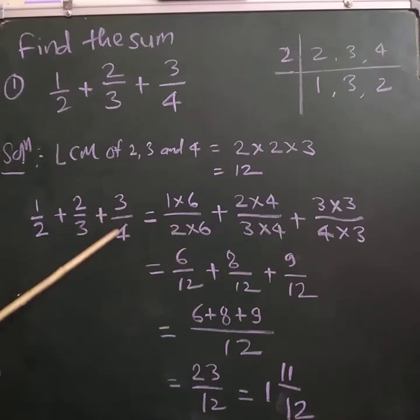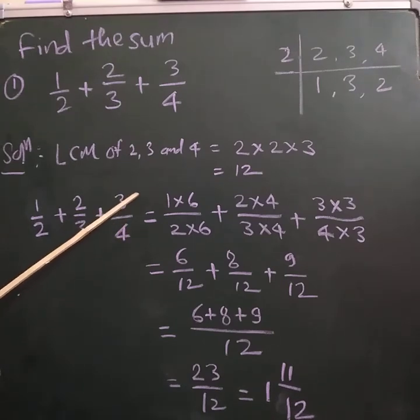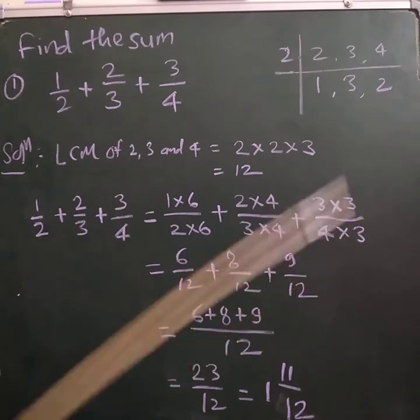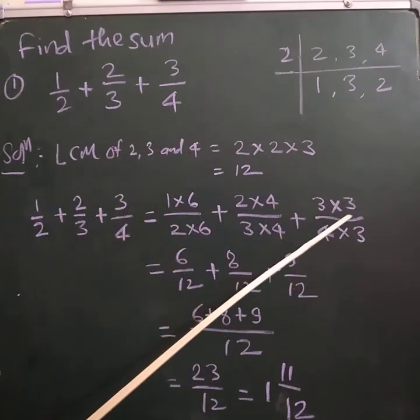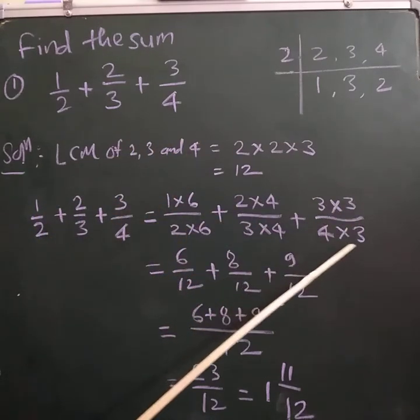Next one is 3/4. We have to make this 4 into 12. So we have to multiply both numerator and denominator by 3. So 3 × 3 divided by 4 × 3.